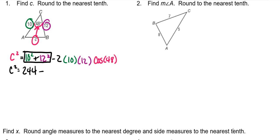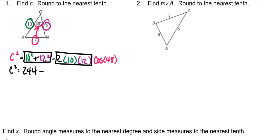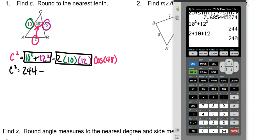And then we're going to minus and put just this in the calculator, which is 2 times 10 times 12. 240. Cosine of 48.